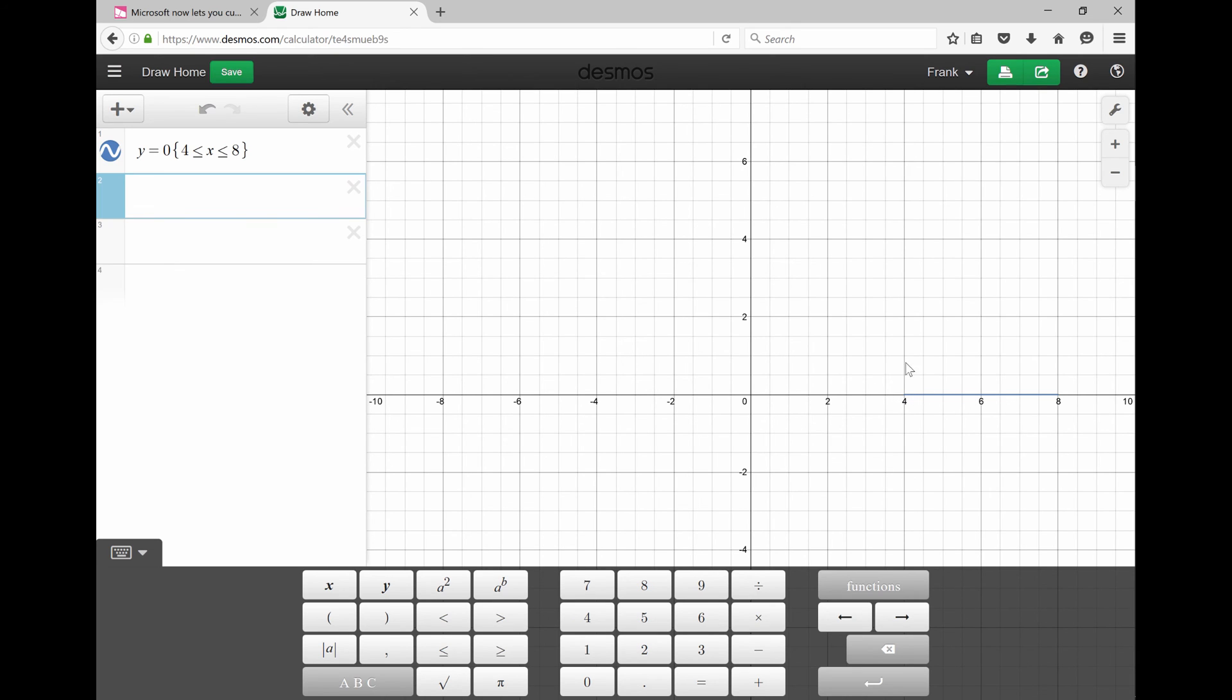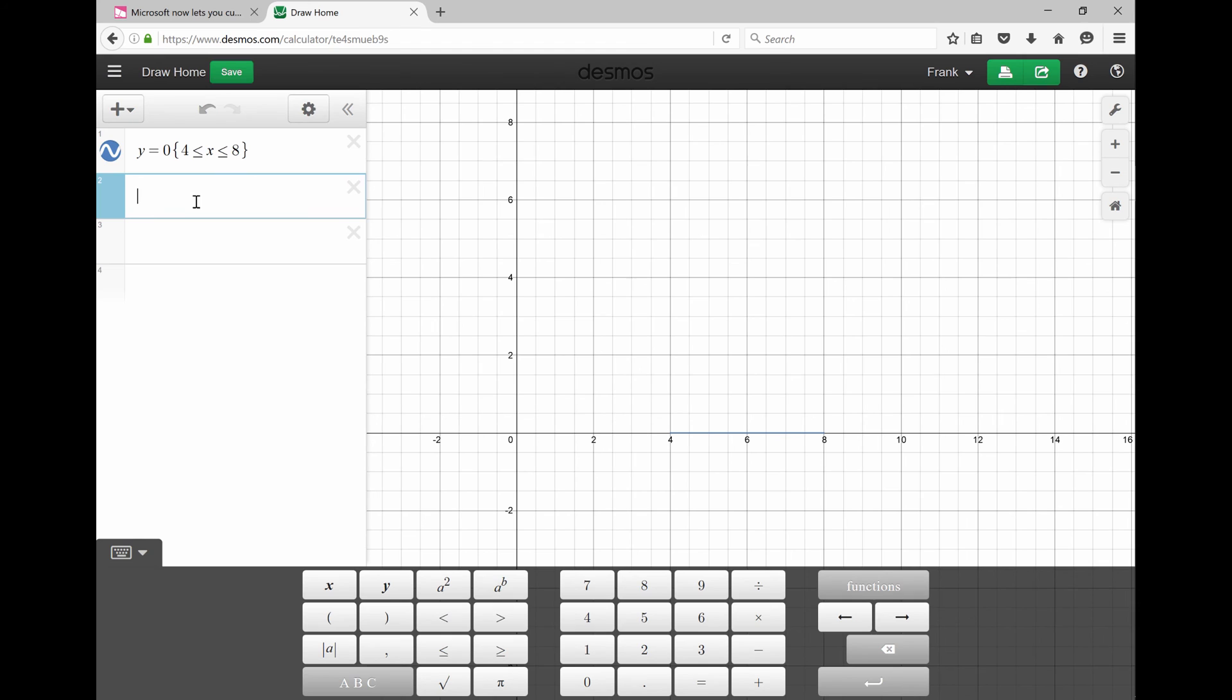You can barely see it, can you? Let's do Y is equal to, let's do the top now, right? Y is equal to 4, and we're going to have the same curly bracket. This time it's going to be 4, less than or equal to X, less than or equal to 8. Curly bracket, okay? And now you got the top.